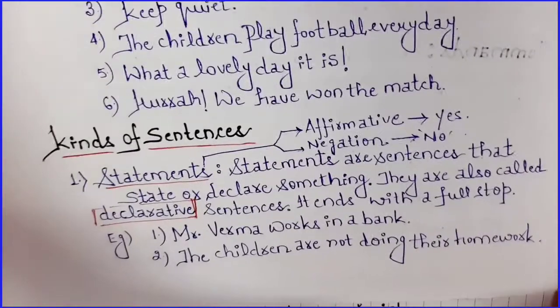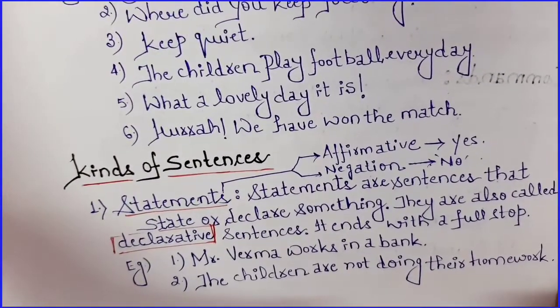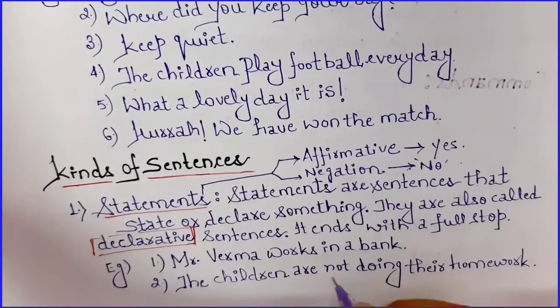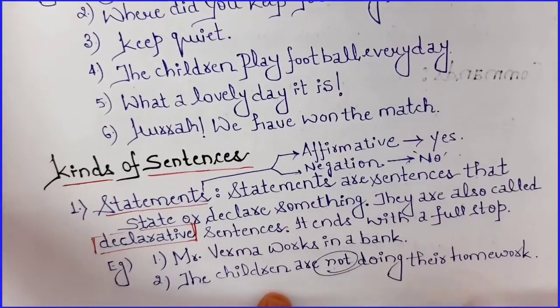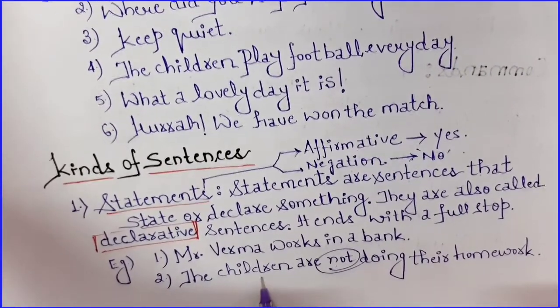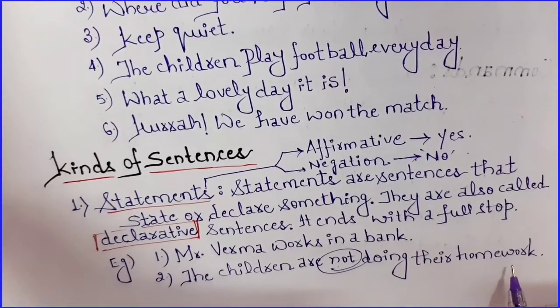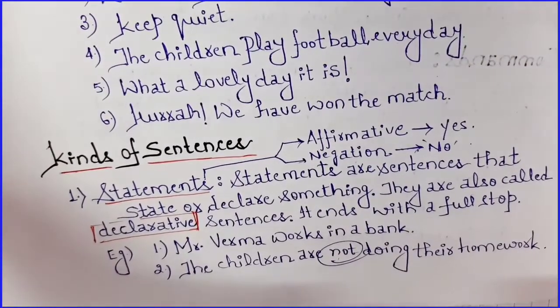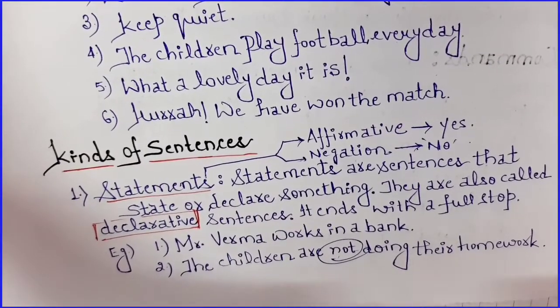Let's look at examples. 'Mr. Verma works in a bank' — this is a normal affirmative statement. Secondly, for negation — you see here we have 'not', so this means it is a negation. 'The children are not doing their homework.' This is a negative kind of sentence — jahan nahi ki baat aa rahi hai ki bachche apna homework nahi kar rahe hain.